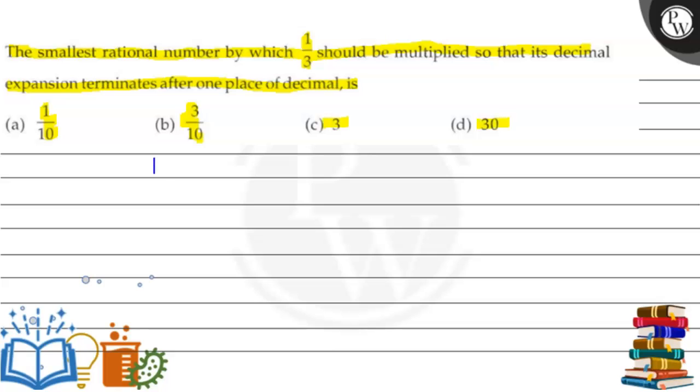In this question, we have 1/3 to multiply with one place decimal. It means that the decimal will be 1 digit. It means that it will be 0.1, 0.2, 0.4, etc.